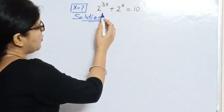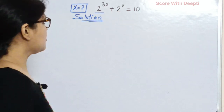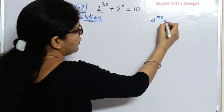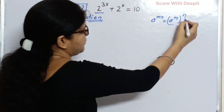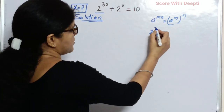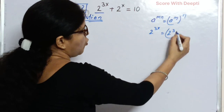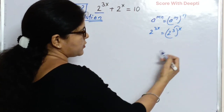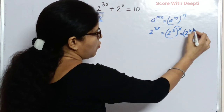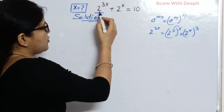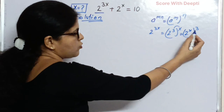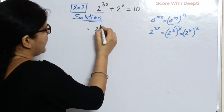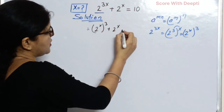In this problem, first we focus on the first term of the left hand side, that is 2 raised to power 3x. Here we apply a rule: a raised to power mn equals a raised to power m, whole power n. So 2 raised to power 3x can be written as 2 raised to power 3, whole power x. Next we exchange the position of the exponent and write 2 raised to power x, whole power 3. So in place of 2 raised to power 3x, we write 2 raised to power x whole power 3, giving us 2 raised to power x whole power 3 plus 2 raised to power x equal to 10.